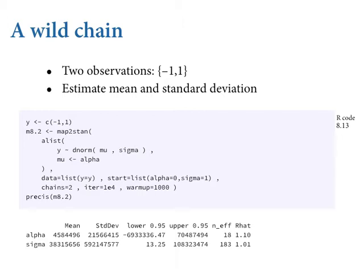We're going to start with an example of a wild chain. Imagine two observations with values minus one and one — that's the data, an anonymous outcome variable. Our goal is to estimate the mean and standard deviation of these data. Setting it up in map-to-stan, I make the vector y of data. What I want you to notice is there are no priors in the model definition, which means they're flat — a constant same value from minus infinity to positive infinity. If you omit the priors, they are by implication completely flat. We're going to estimate alpha and sigma.